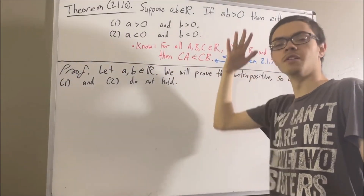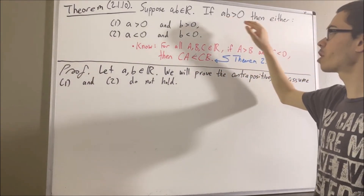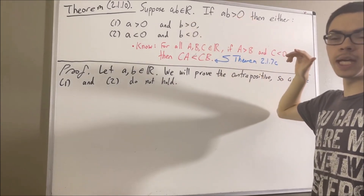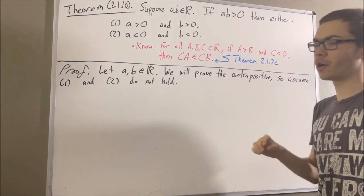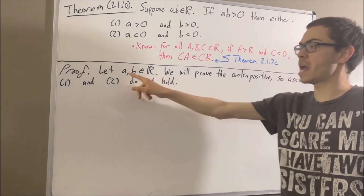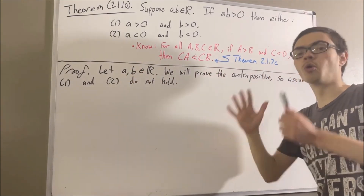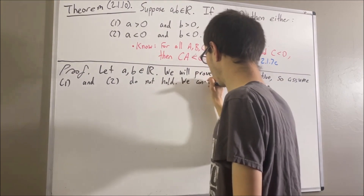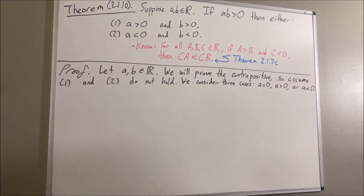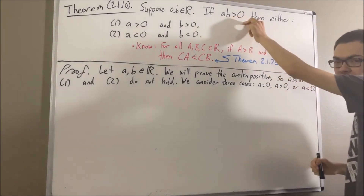Our goal from here is to prove that AB greater than zero does not hold — that is, we want to prove that AB is not greater than zero. To prove that, we're going to consider three primary cases: either A is equal to zero, A is greater than zero, or A is less than zero. We're going to prove that in either case, AB is not greater than zero.